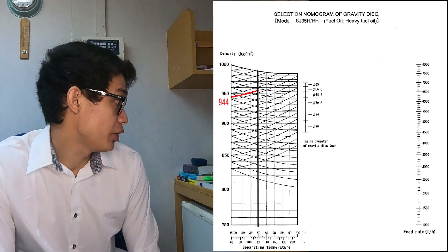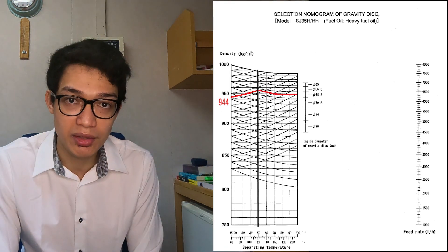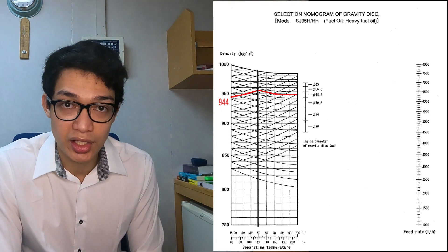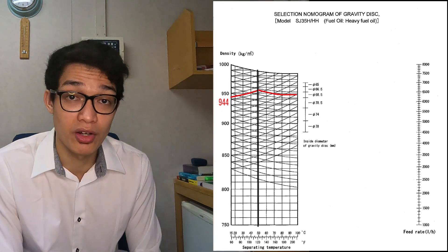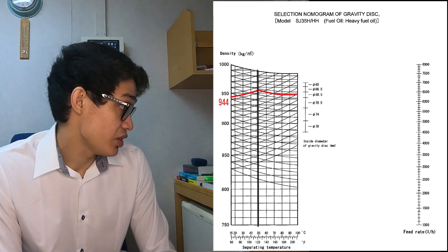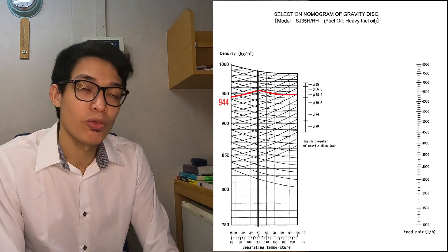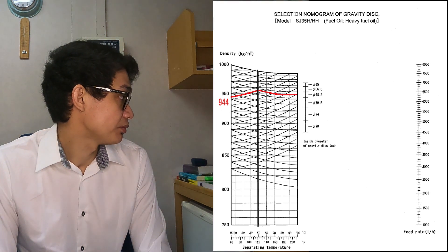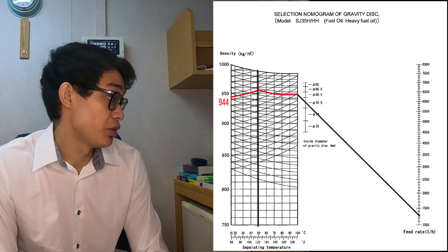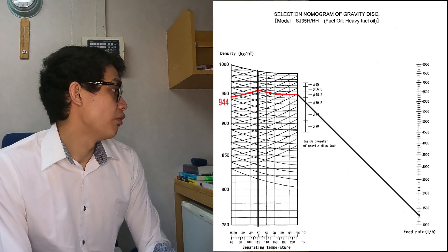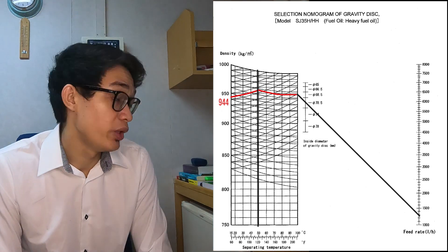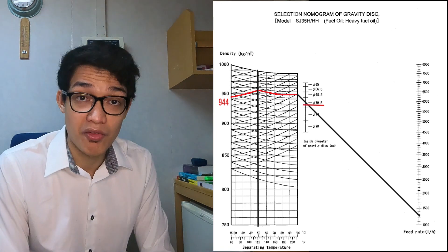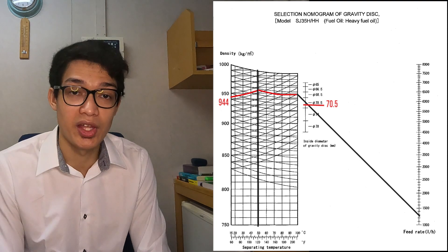From the converted point, we draw a falling curve until it intersects with the vertical line for the treating temperature of 98 degrees Celsius. Then we draw a horizontal line until it reaches the 100-degree vertical line. After that, we connect the point on the 100-degree vertical line to the given feed rate of 1,250 liters per hour using a straight line. With the intersection made by the gravity disk section on that line, we can now read the correct gravity disk for the given oil, which is 70.5.